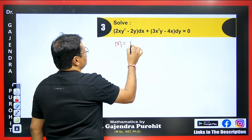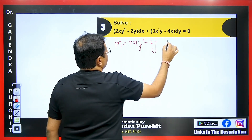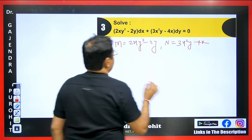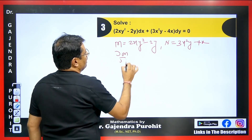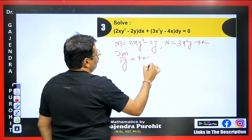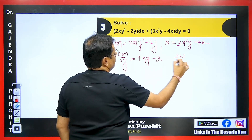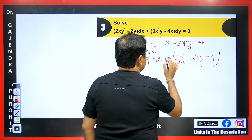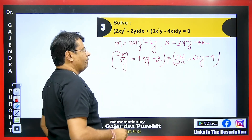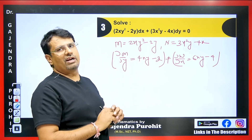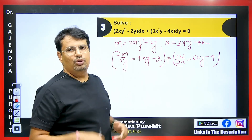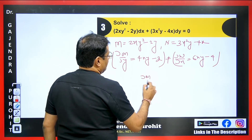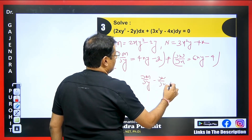Here M = 2xy² − 2y and N = 3x²y − 4x. We calculate ∂M/∂y = 4xy − 2 and ∂N/∂x = 6xy − 4 — not equal, so the equation is not exact. Both M and N have two terms each, so we must check the difference and decide which formula to use. We first compute (∂M/∂y − ∂N/∂x) = (4xy − 2) − (6xy − 4) = −2xy + 2.